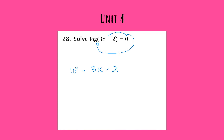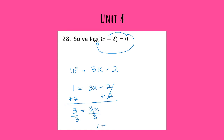From here I can simplify and solve. 10 to the 0 power is 1 — in fact, any number to the 0 power is 1, except 0 to the 0 which is undefined. So I have 1 equals 3x minus 2. I add 2 to both sides: 1 plus 2 gives me 3. Then I divide both sides by 3, so x equals 1.